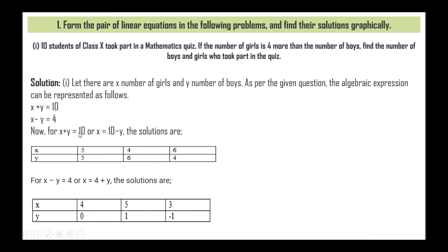For x + y = 10, or x = 10 - y, the solutions are: x = 5, y = 5; x = 4, y = 6; x = 6, y = 4. For x - y = 4, or x = 4 + y, the solutions are: x = 4, y = 0; x = 5, y = 1; x = 3, y = -1. You just have to put the values of x or y in the given equation to get the other variable.